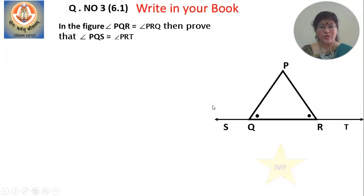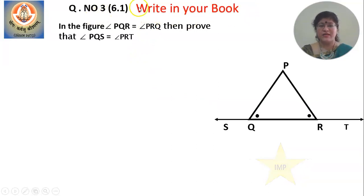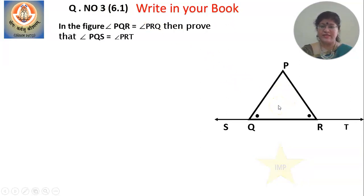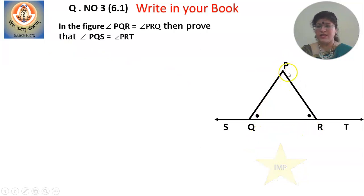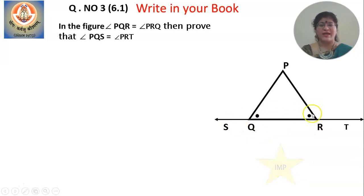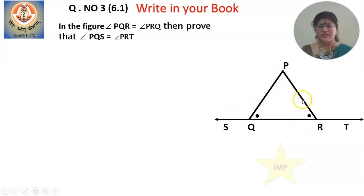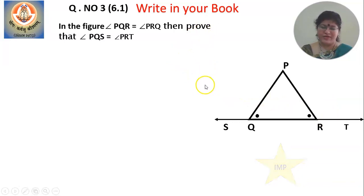This is also a very important question — make a note of it. It is question number 3 from 6.1. You will also draw the diagram, which is given in the textbook. In the figure, angle PQR is equal to angle PRQ, shown with two dots indicating these two angles are equal. You have to prove that angle PQS is congruent to angle PRT. Whenever a proof is given, write down what is given and what you need to prove.